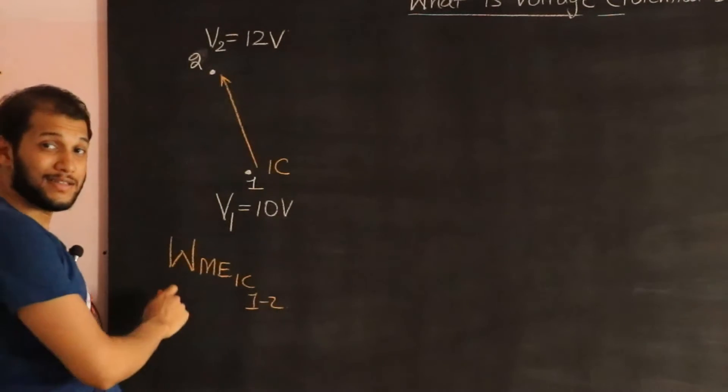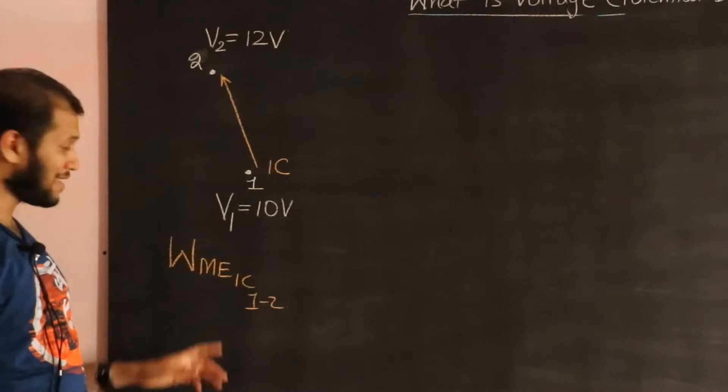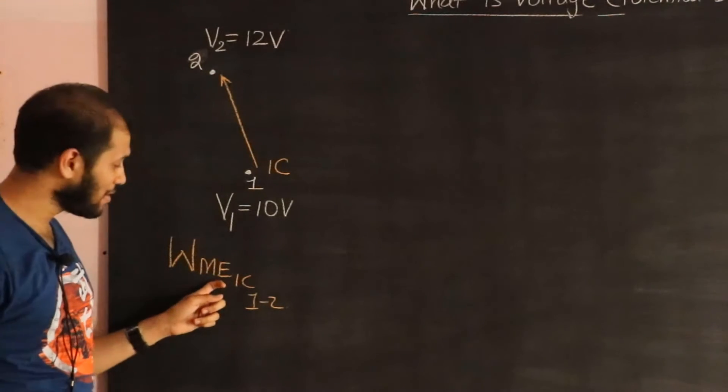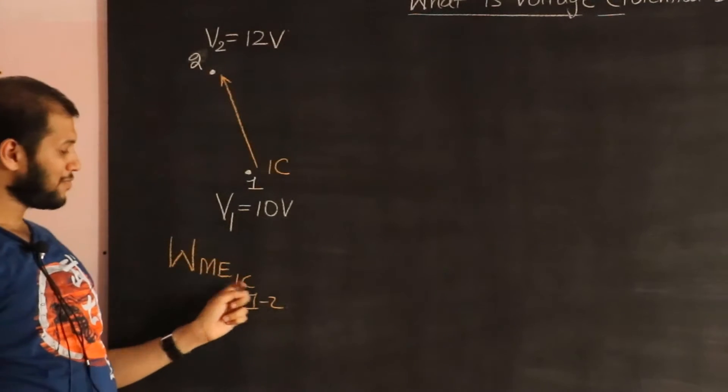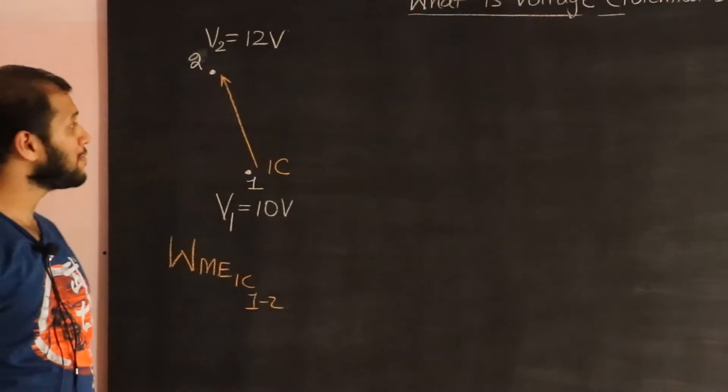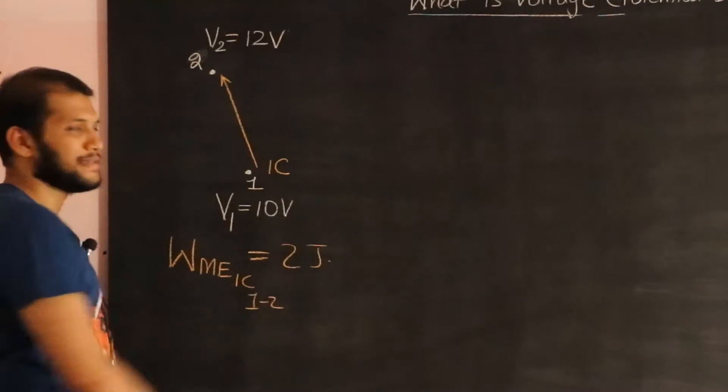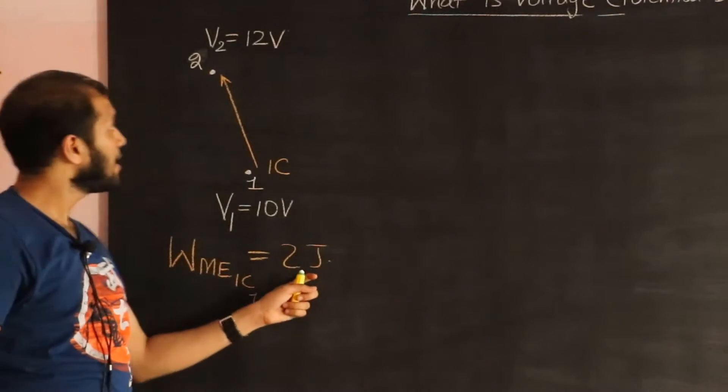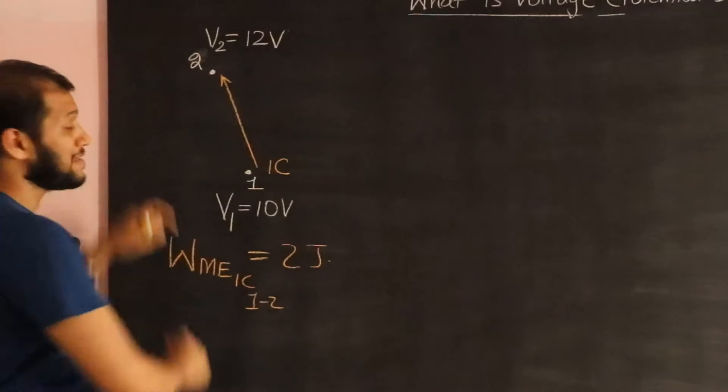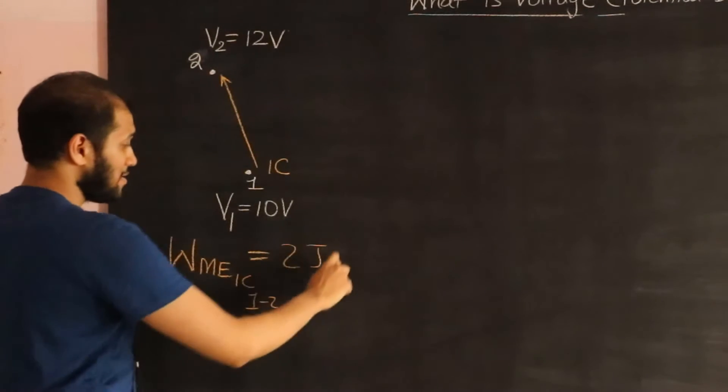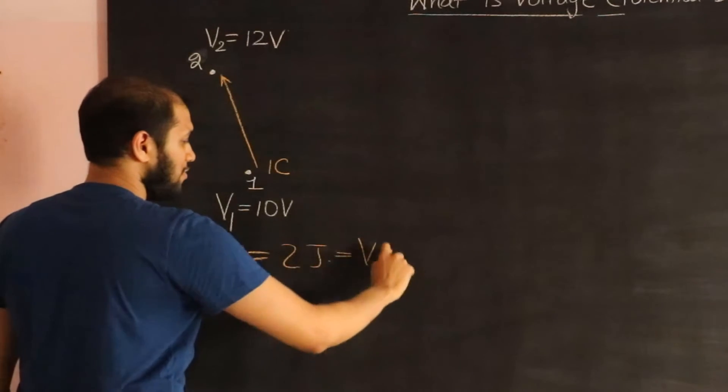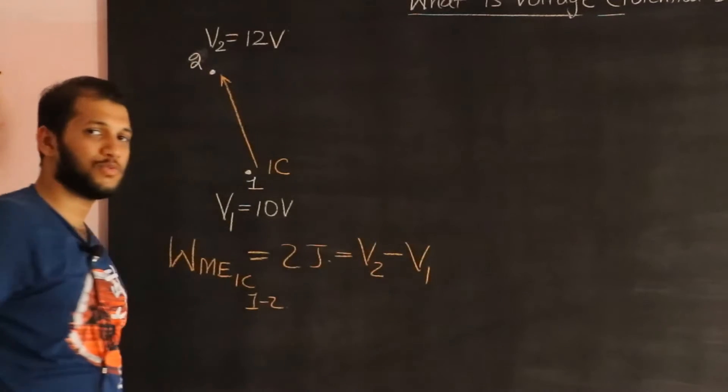Okay, so that's a huge notation, but try to understand: me doing the work in moving a coulomb from 0.1 to 0.2, that is 2 joules in this example. And how did I get that 2? I just take the difference V2 minus V1.